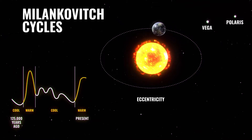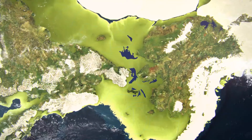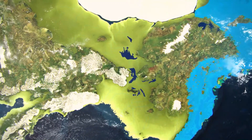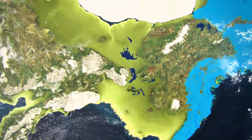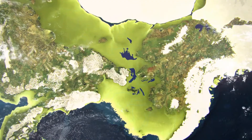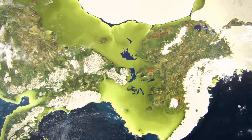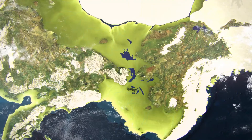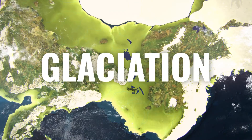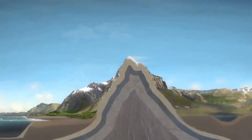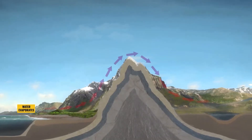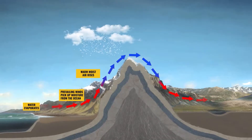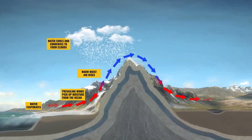But how do glaciers form? Glaciers are created when large amounts of fallen snow compress over long periods of time into thick, dense sheets of ice. Glaciers grow and melt every year, but when they grow faster than their annual melt and continually expand, the process is called glaciation. Beringia avoided glaciation because high mountain ranges blocked precipitation from the Pacific, creating rain and snow shadows.